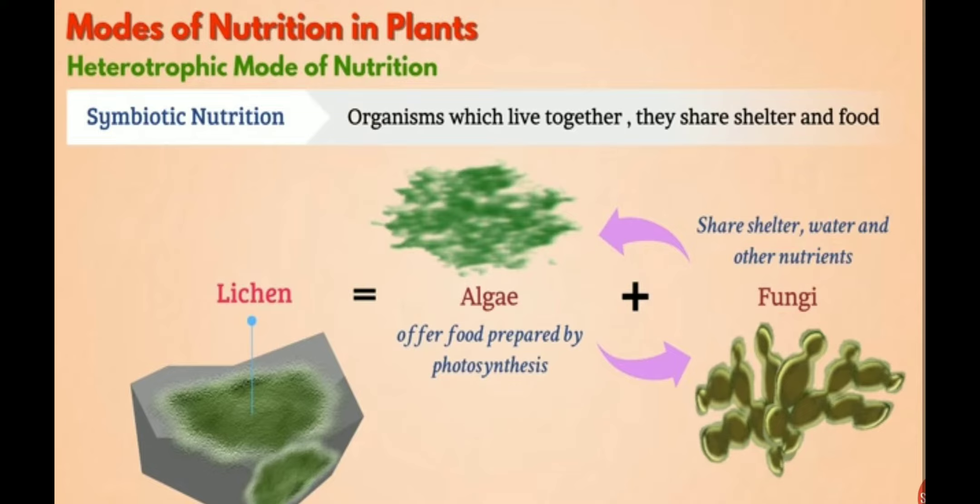In return, fungi give water and other nutrients to the algae, so lichen is the example of symbiotic nutrition. Lichen is locally called dagadphool. It grows on stone and is an example of symbiotic nutrition because it contains both algae and fungi. We also use dagadphool or lichen as a spice for cooking food.